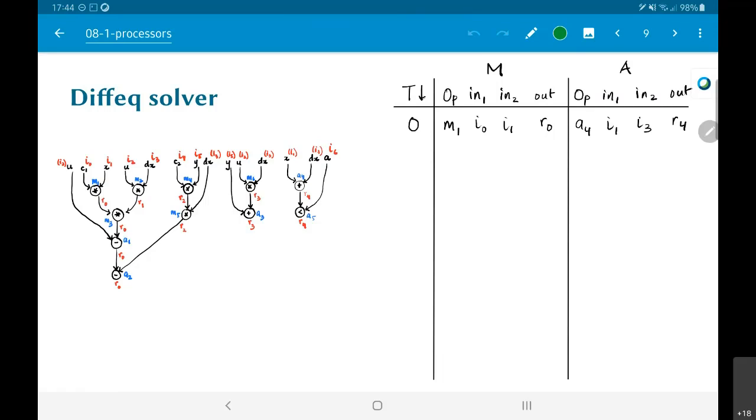So I0 and I1, those two inputs are fed in as in1 and in2 of the multiplier M and the output is R0. All right.